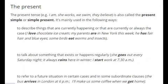The present tense is also used to talk about something that exists or happens regularly — meaning every time, at that time. For example: she goes out every Saturday night; it always rains here in winter; I start work at 7:30 a.m. The simple present tense is also used to refer to a future situation in certain cases and in some subordinate clauses. For example: the bus arrives in London at 6 p.m.; I will make us some coffee when we get home.